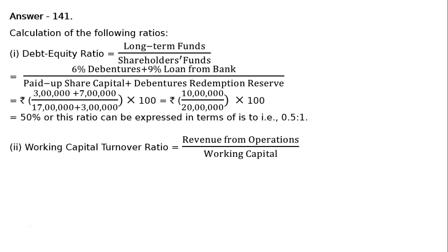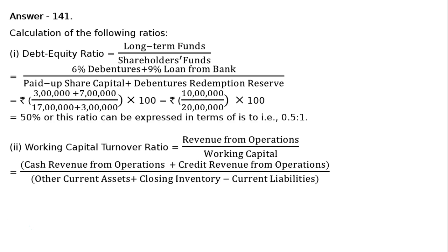Then the second one is Working Capital Turnover Ratio. That is Revenue from Operations upon Working Capital. That is equal to Cash Revenue from Operations plus Credit Revenue from Operations, whole divided by Other Current Assets, which are Liquid Assets, plus Closing Inventory (Closing Stock), minus Current Liabilities.